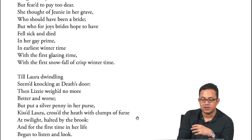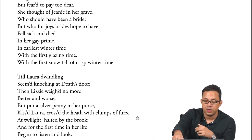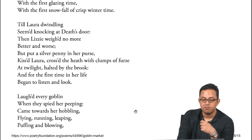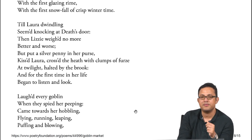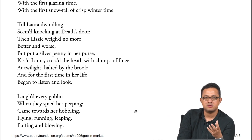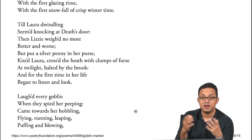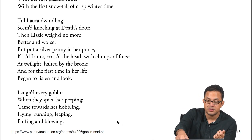Lizzie crossed the heath with clumps of ferns at twilight, halted by the brook, and for the first time in her life began to listen and look. Every goblin laughed when she came toward them — 'hobbling, flying, running, leaping, puffing and blowing.' None of these movements are human in quality; they have a degree of menace, like bats flying in, different animals crawling, running, and leaping with a sense of menace created around her. That market becomes a market of menace and dangerous possibilities, as already established in the case of Laura.